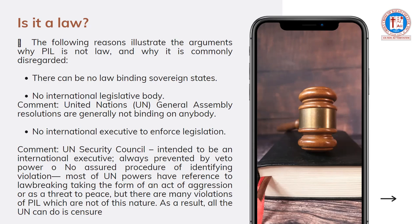In other words, you cannot intervene in matters involving domestic interest. Second argument: there is no international legislative body. Unlike in a national sphere where you have a legislative department which creates law, in international law there is no specific legislative body where ambassadors get to meet, decide on legislation, and implement it. There is no legislative institution in international law.